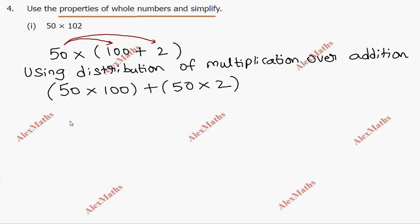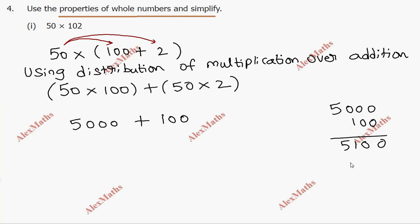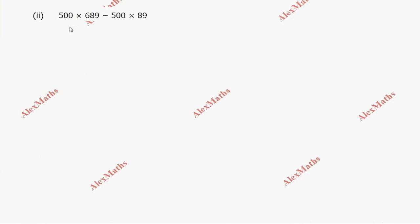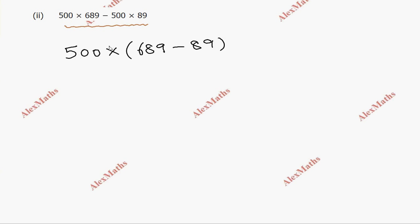Subdivision 2: 500 into 689 minus 500 into 89. Using the distributive property, we take 500 as the common factor: 500 into (689 minus 89). We apply distribution of multiplication over subtraction. Simplifying: 689 minus 89 equals 600. Then 500 into 600 — multiply 5 into 6 equals 30, with 4 zeros, giving 300,000.